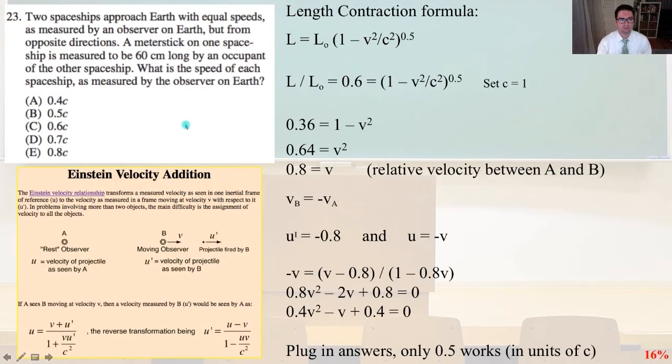Number 23. Two spaceships approach Earth with equal speeds as measured by an observer on Earth but from opposite directions. A meter stick on one spaceship is measured to be 60 centimeters long by an occupant of the Earth. What is the speed of each spaceship as measured by the observer on Earth?